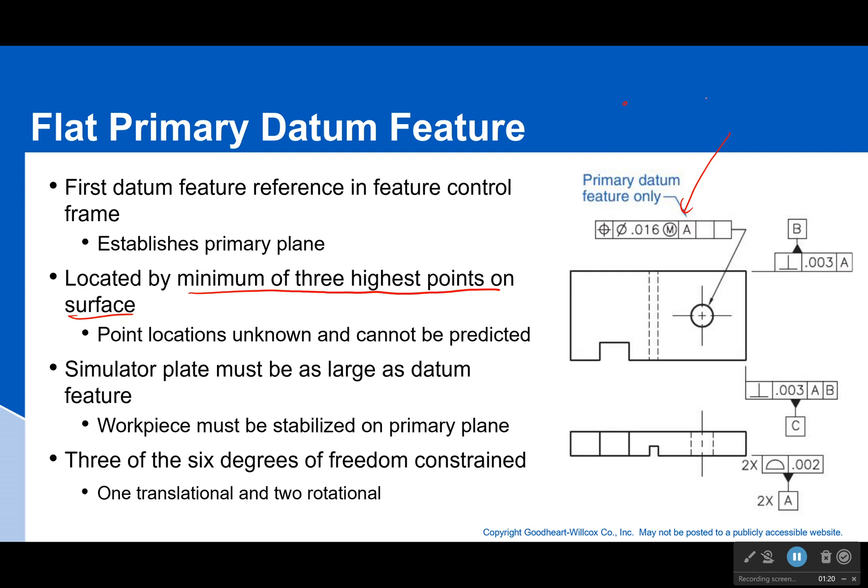Those three highest points are enough to make a plane. If you think about it, one point gives you a dot, two points give you a line, and three points can give you a plane. So that's where it's coming from. We need at least three points to make that plane.